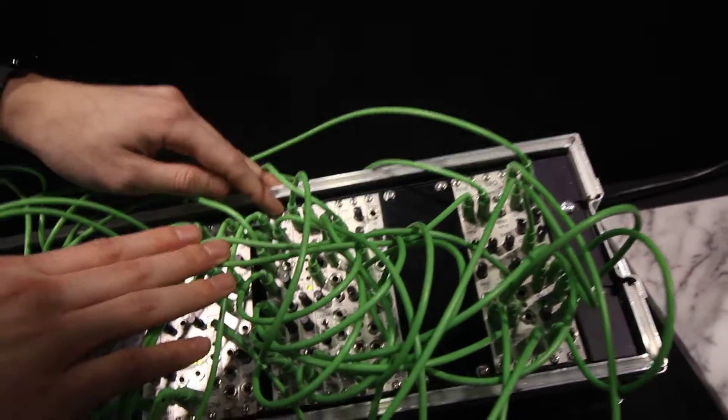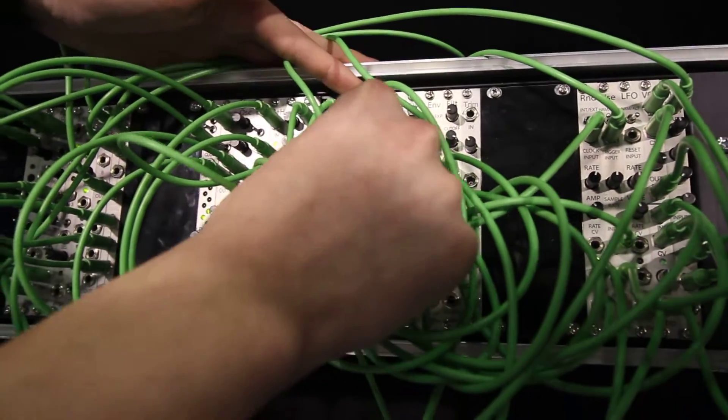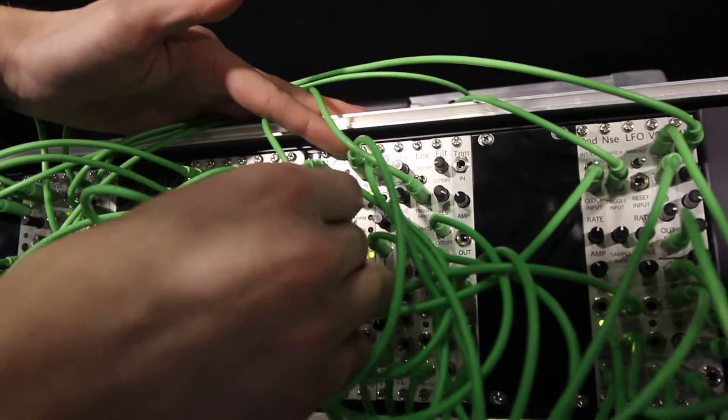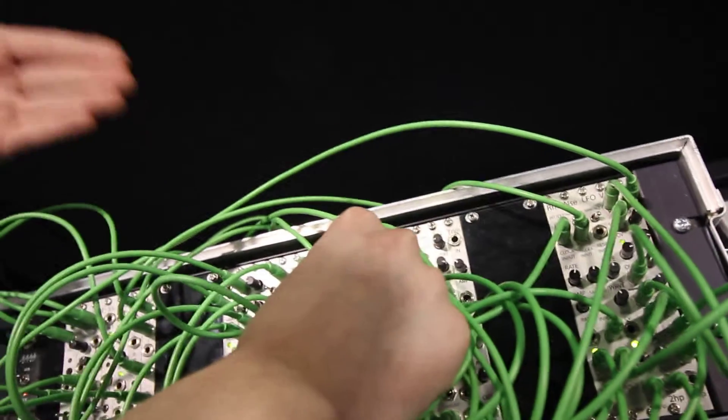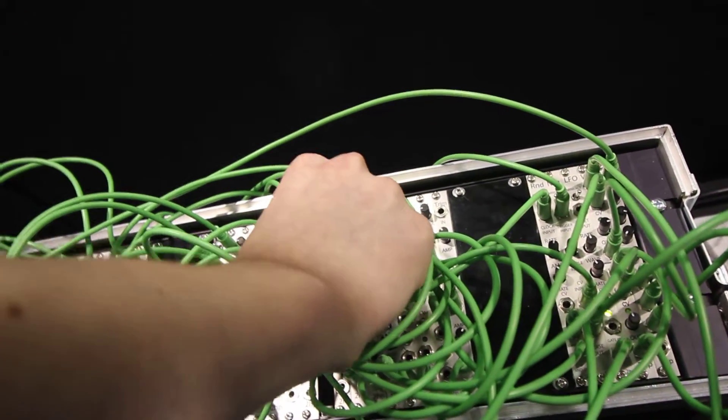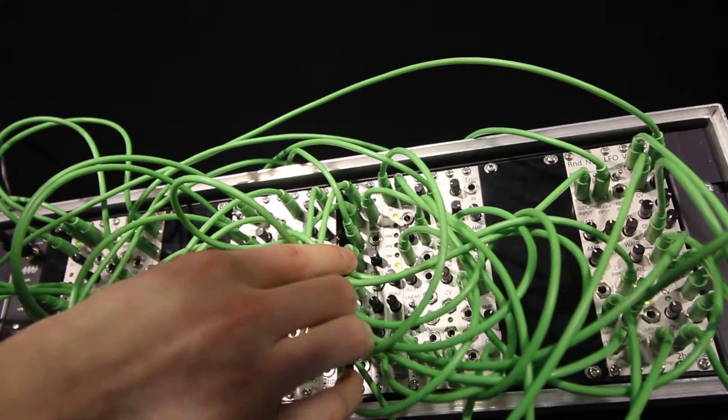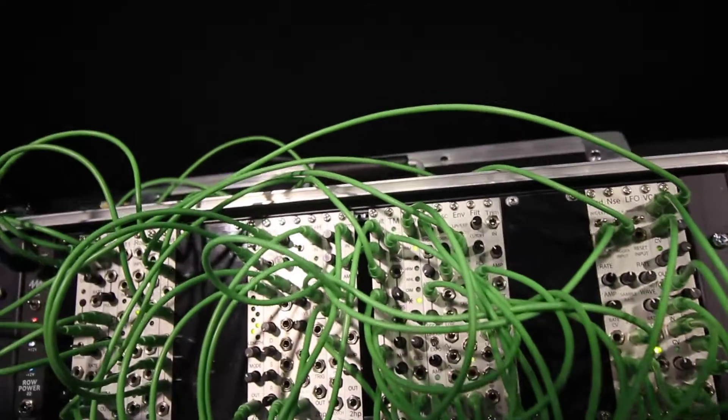Further down, we've got a Turing machine. The Turing machine has a probability control which, when far left, will pick a new random value for that step of the sequence every time a trigger is present at the input. On the opposite side of the knob, it will lock the existing sequence into place and not choose new random values.